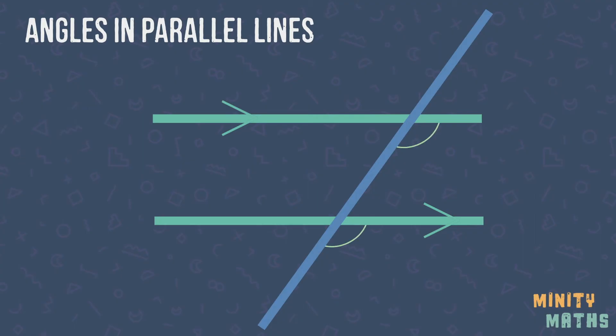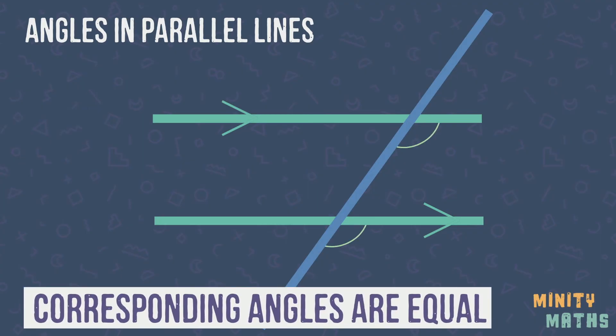Corresponding angles are also equal and these can be found within an F shape. Note that the F can also be facing backwards. Now let's look at this example.